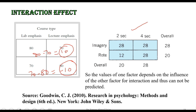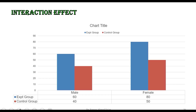In another example with values 28, 28, 28, and 12: the difference in the first row is 28 minus 28, which equals 0. But in the second row, 12 minus 28 gives minus 16. Because these two values, 0 and minus 16, are not the same, there is an interaction effect.